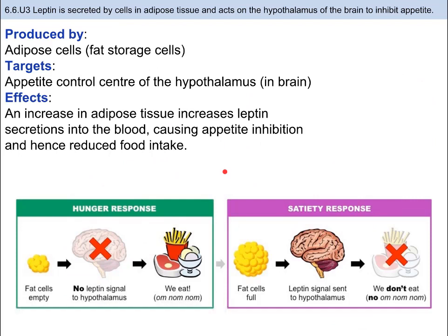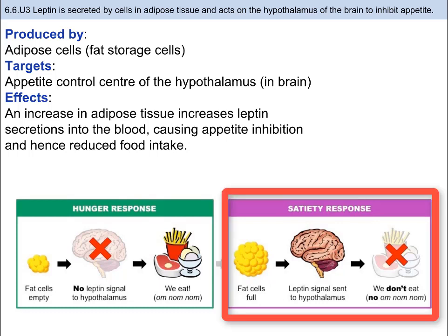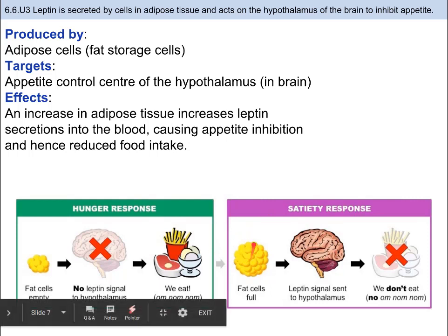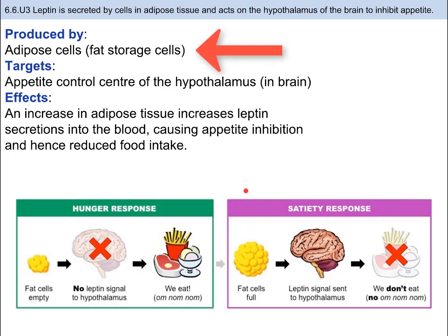Another important hormone is leptin. It is important at regulating fat stores in the body by suppressing appetite. When leptin is produced, the cells bind to the receptors in the hypothalamus to inhibit appetite, which reduces food intake. Obese people have more adipose fat cells — that is what produces leptin. Therefore, if you have more adipose fat cells, you produce higher levels of leptin. Just like with our example from insulin, the body becomes desensitized to the hormone. Obese people are more likely to feel hungry and less likely to recognize when they are full, hence more likely to overeat.